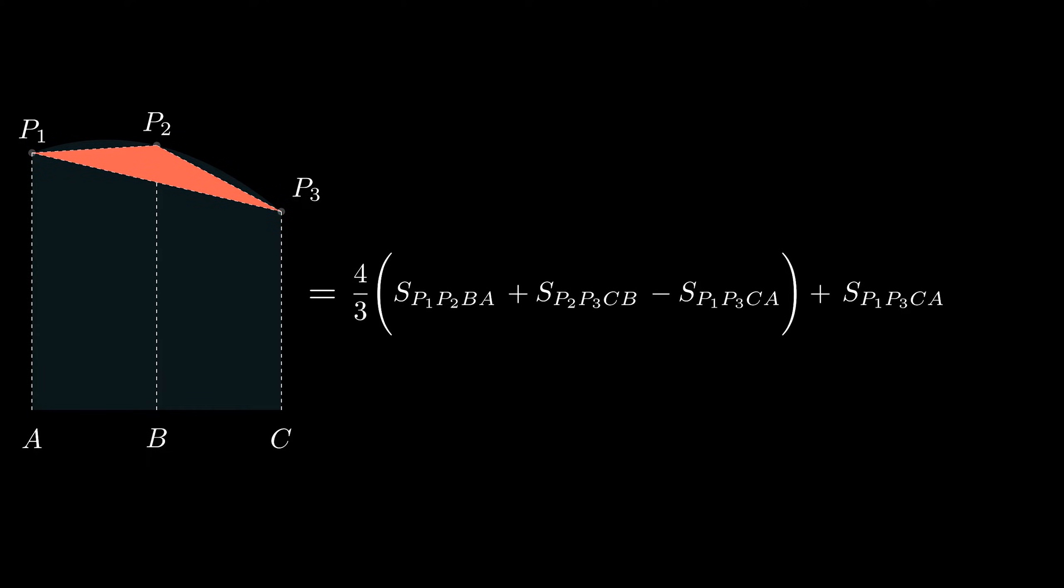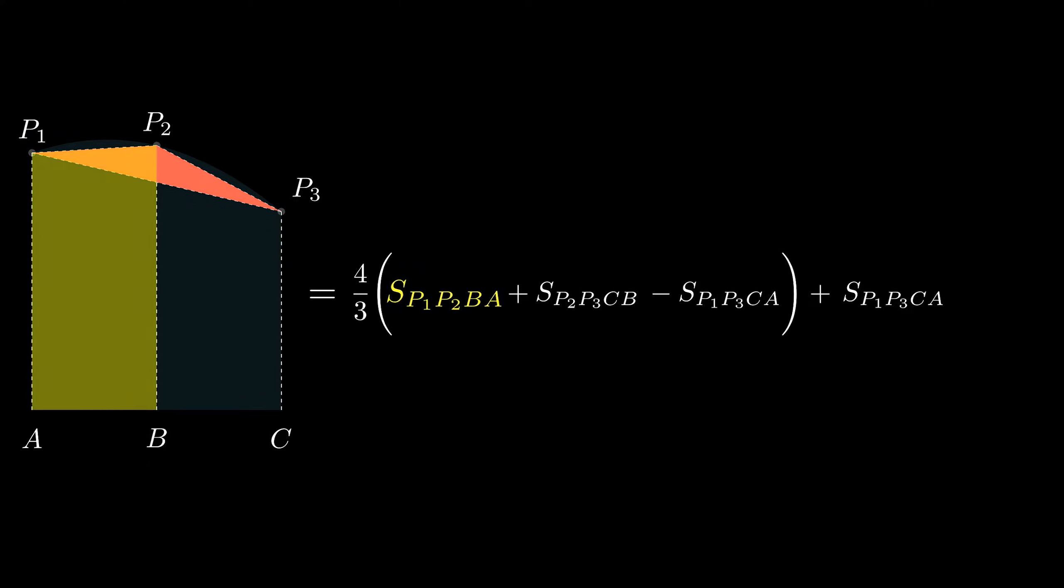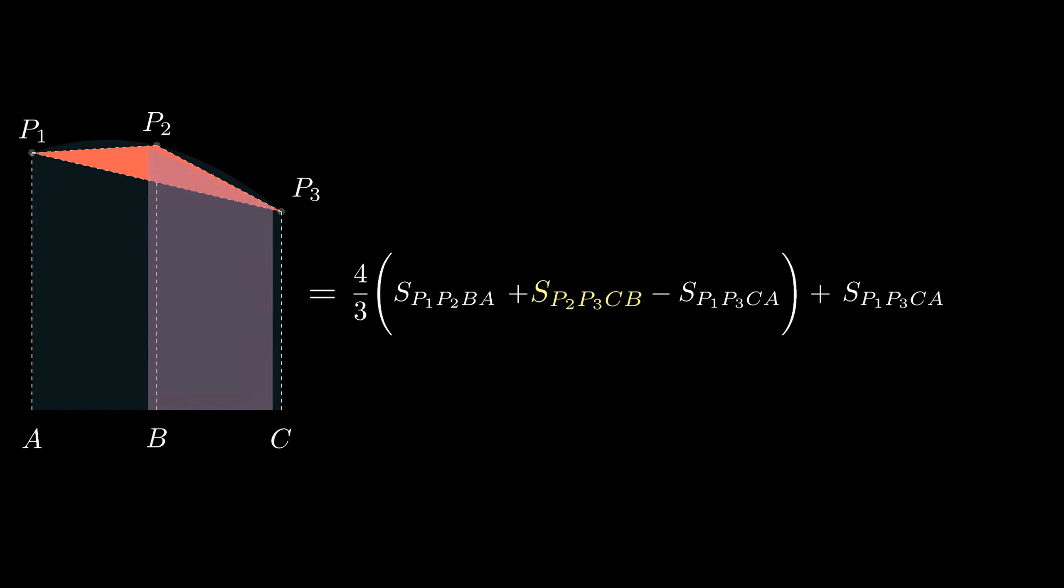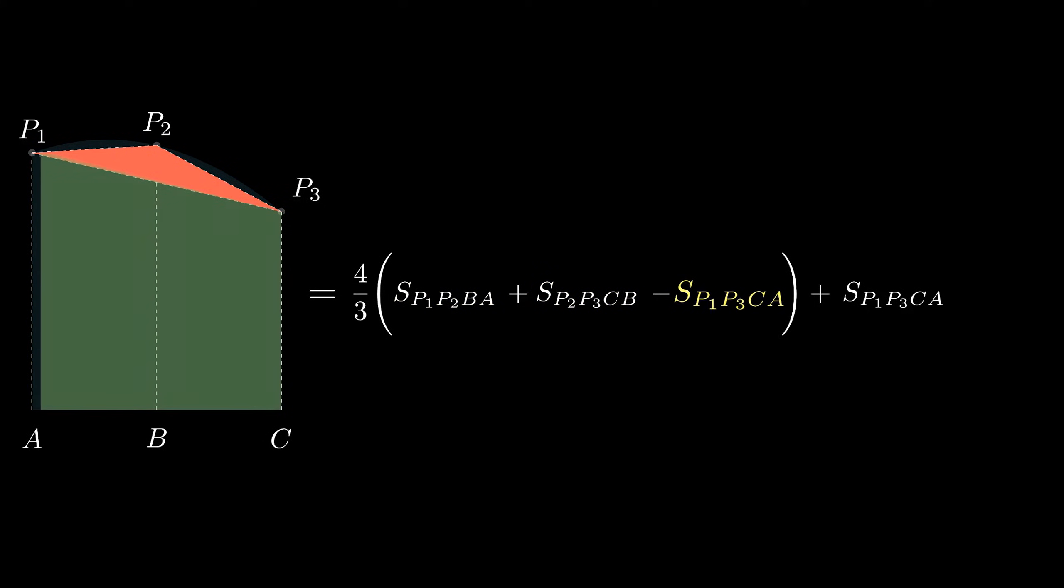We can write the triangle as the sum of two trapezoids P1, P2, BA and P2, P3, CB minus the trapezoid P1, P3, CA.